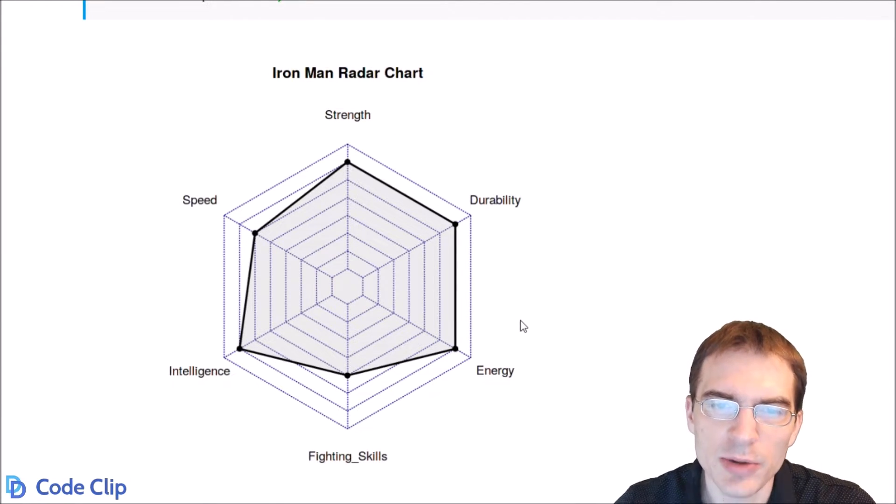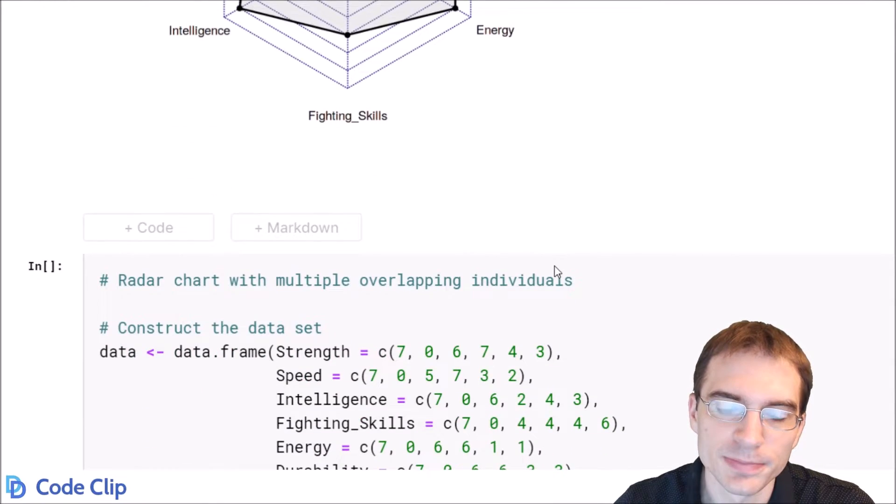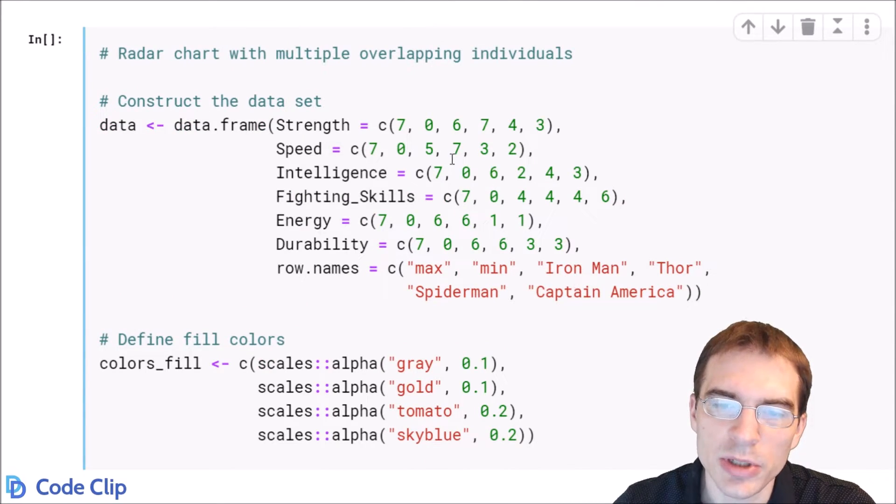I'll also show how to make a radar chart that overlays multiple individuals on the same plot. It's going to be very similar to what we did above. We just need to basically construct a data set that includes more characters.